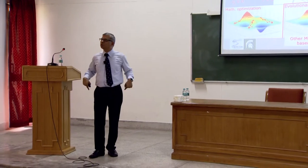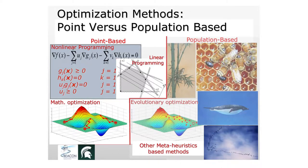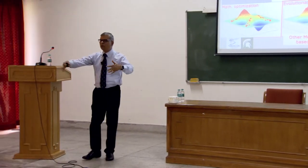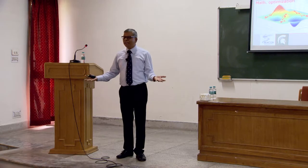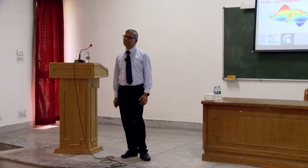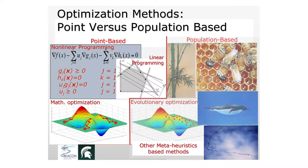The problem with point-based methods is that decisions are made based on local neighborhood information only — you cannot see a peak far away. Once you reach a local optimum, every neighboring point looks worse, so the algorithm terminates thinking it found the global solution. To escape, you must restart from another guess point, and if the global optimum is in a very narrow region, it takes many iterations to find it.